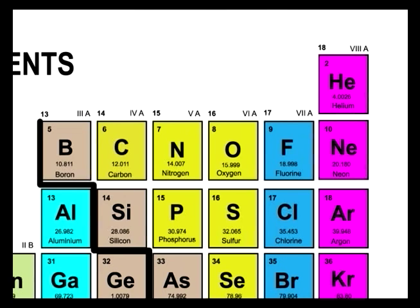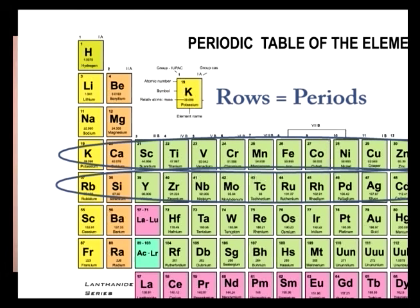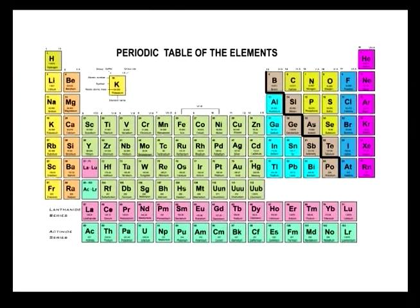Groups are the vertical columns — the most important thing to understand. The horizontal rows are called periods. Period 1 is the very top row with Hydrogen and Helium. Period 2 is the row underneath that, period 3 is the next row down, and so on, cutting all the way across. This terminology is important because you'll almost certainly be asked on a test, and you'll encounter it in your textbook — for example, 'the group 3 elements share the following properties.'